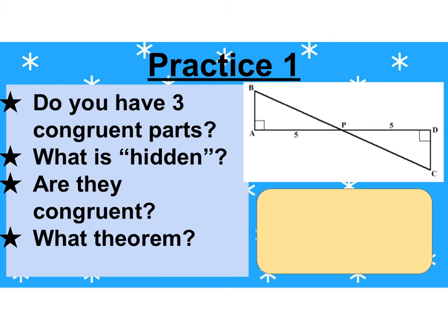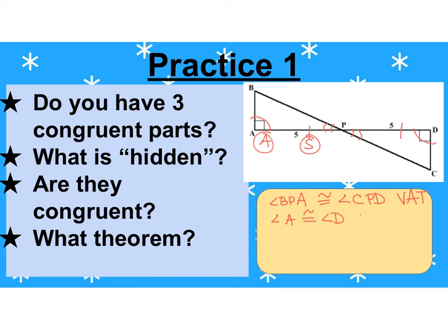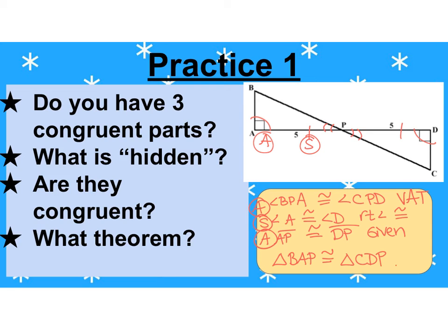Let's do a couple of practice problems. Do these triangles have three congruent parts? Well, they both have a right angle, so those are congruent. They both have a side of five, so those sides are congruent. And then I have a vertical angle in the middle. So I can say angle BPA is congruent to angle CPD by the vertical angle theorem. Angle A is congruent to angle D because right angles are congruent. And AP is congruent to DP because it's given. So I have angle, side, angle. Therefore, triangle BAP is congruent to triangle CDP by angle-side-angle. We just did a triangle proof!